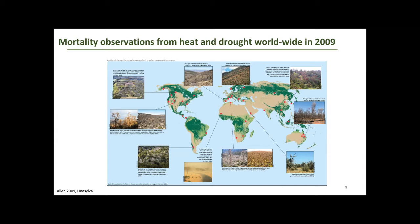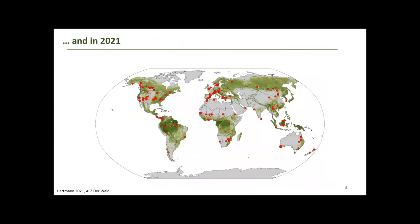What we see on this map is that basically in all forested biomes, we have this linkage between changes in climate — so extreme events — and increasing tree mortality. This situation has not improved; by contrast, the observations have accumulated over time. This is a map from 2021 where we can see there are many more dots that have occurred on the globe.